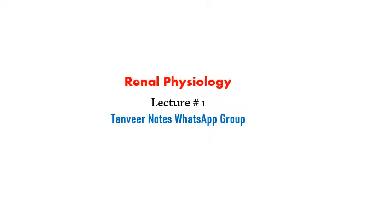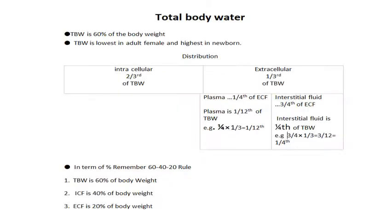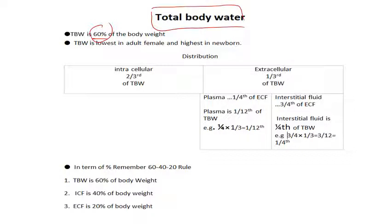Today we have our first lecture of renal physiology — one of the most important topics with key concepts. The first concept is total body water. Total body water is 60 percent of body weight. So if your body weight is 100 kg, then 60 kg of that is water. This water is distributed into two compartments: intracellular and extracellular. Intracellular means within the cell, extracellular means outside the cell.